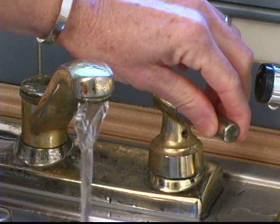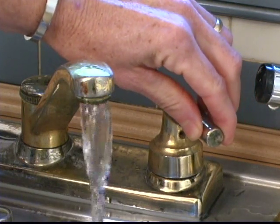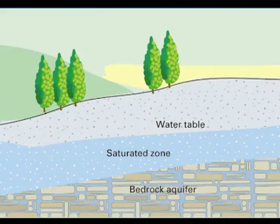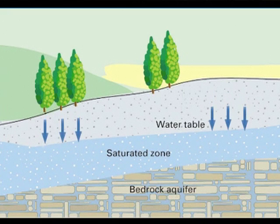When you turn on your faucet, you expect good quality water to flow from it. Where is this water coming from, and how does it get into our private wells? The water in a private well is called groundwater. Groundwater is the water that's underneath the ground — it fills the spaces between the soil and the fractures and the bedrock.